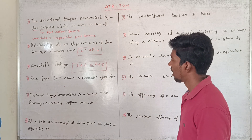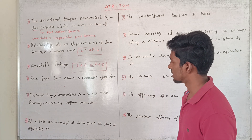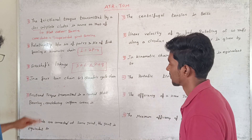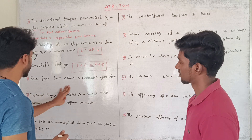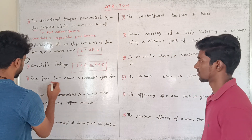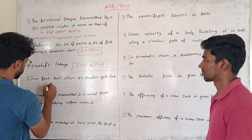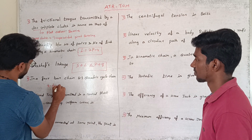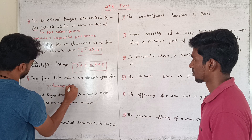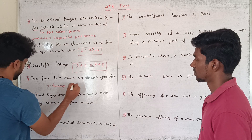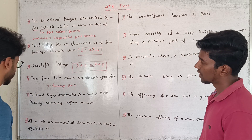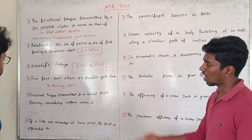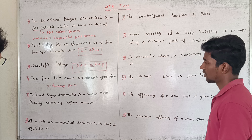What is the 4-bar chain? In this 4-bar chain, there is a turning pair — that is the turning path in a 4-bar chain.